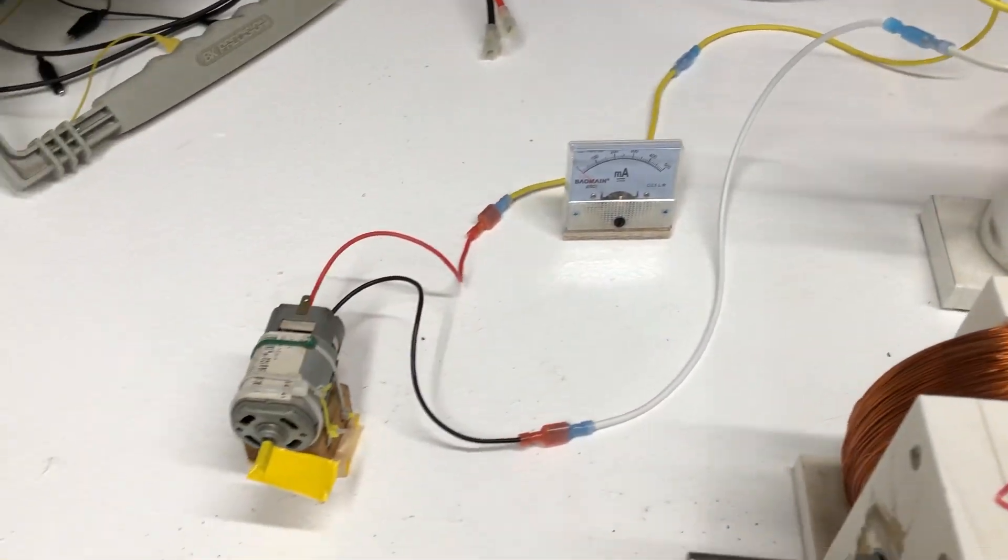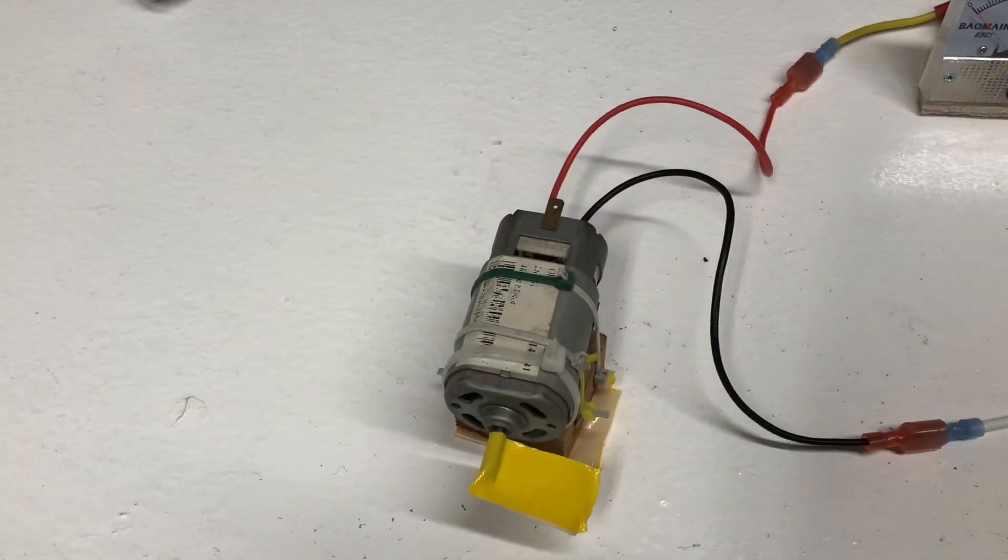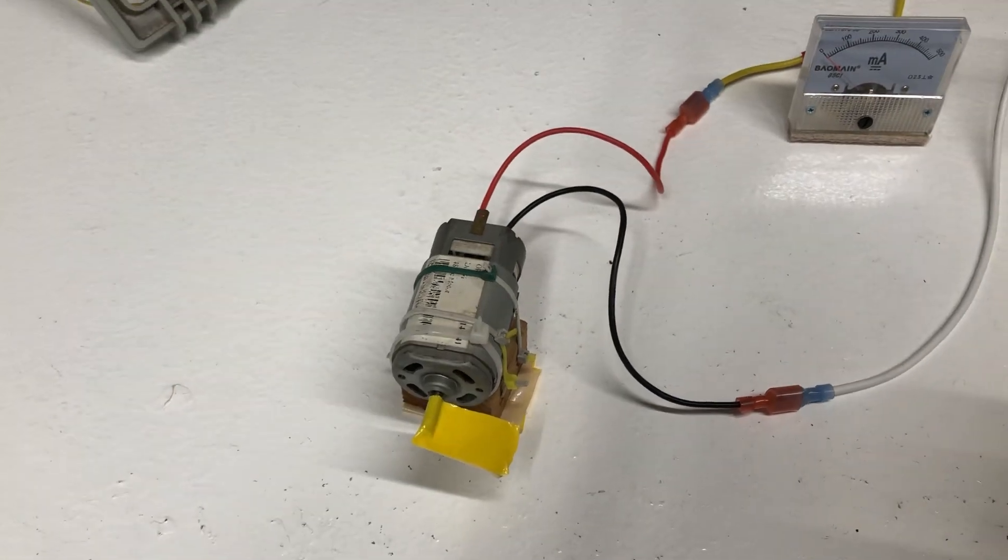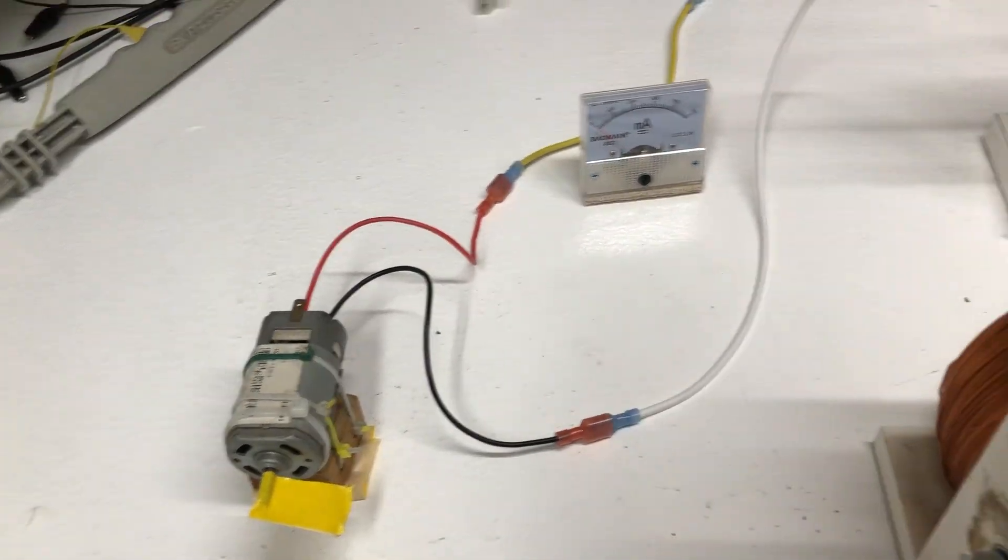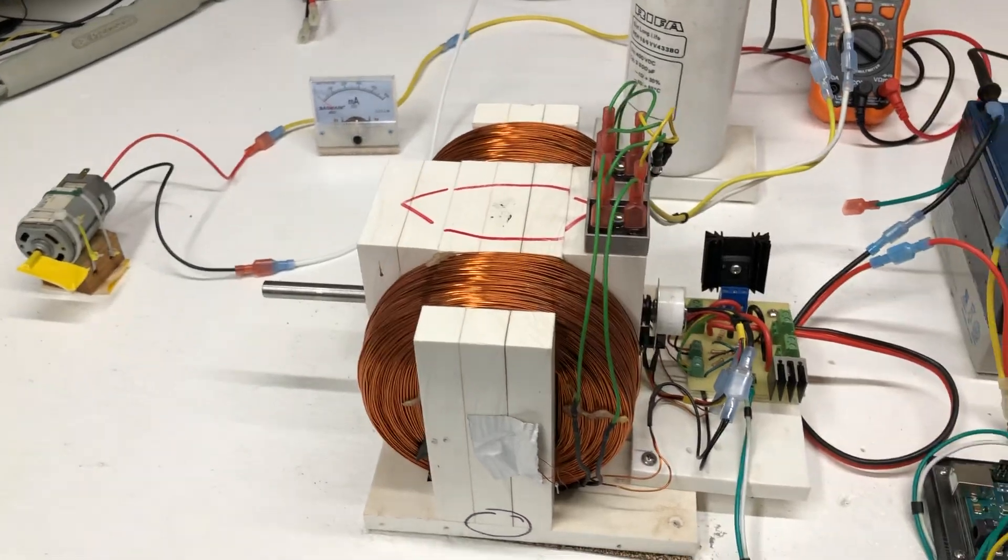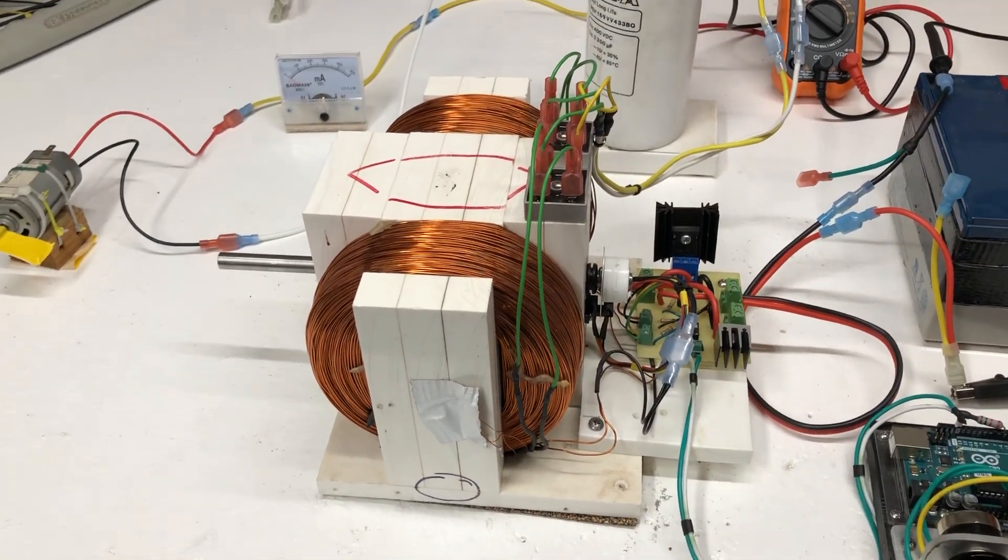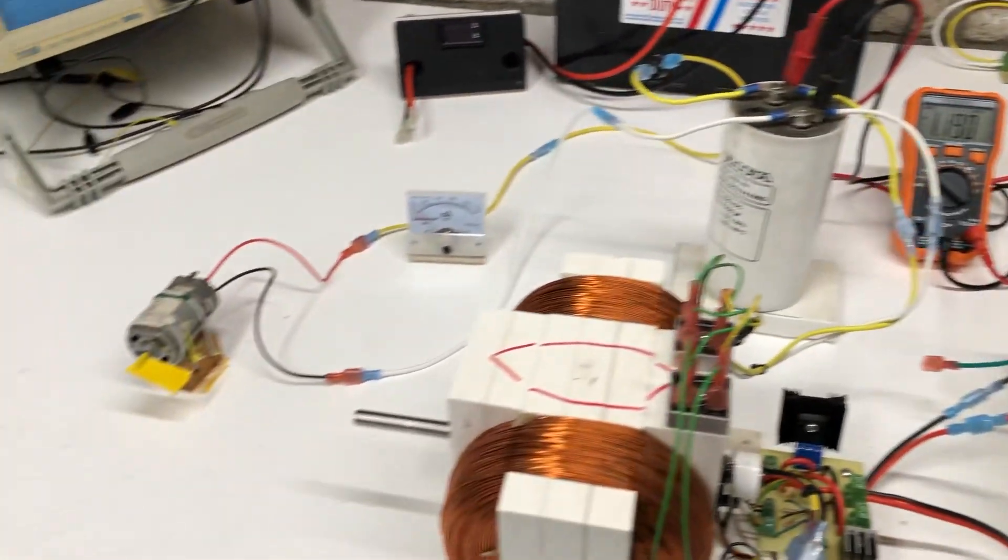And then it's going to travel down the line and run this motor. This motor is just a basic 48 volt brushed DC motor. So basically the output of this motor while it's running is going to run that motor.